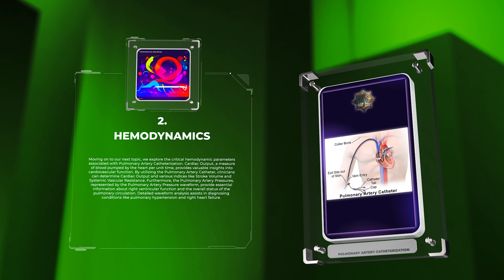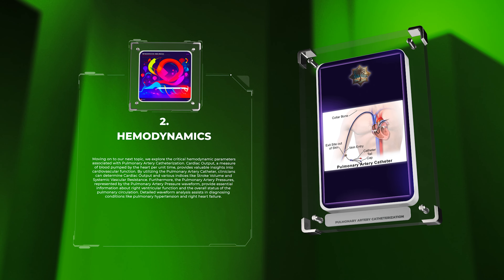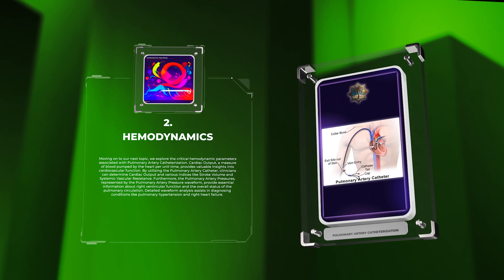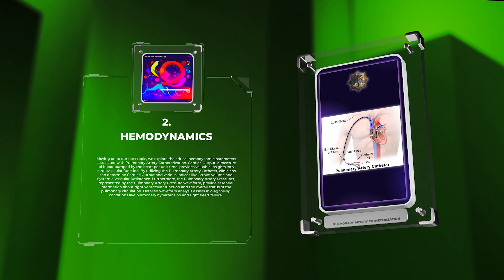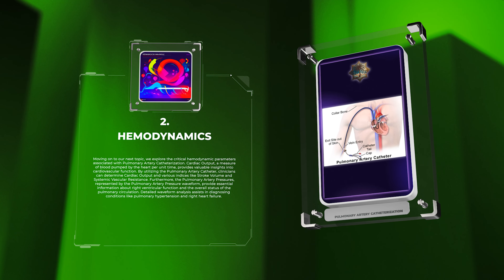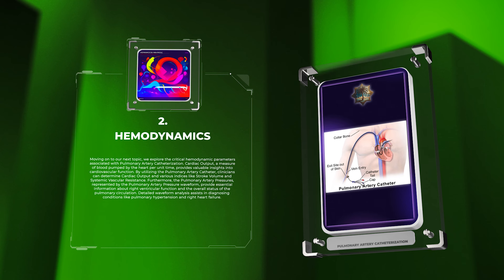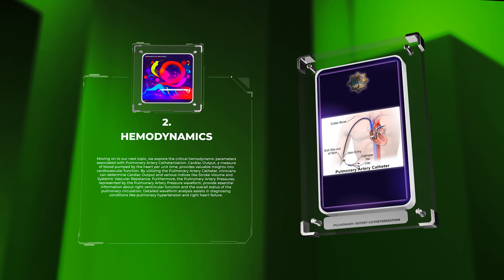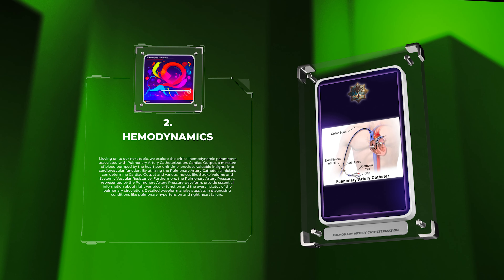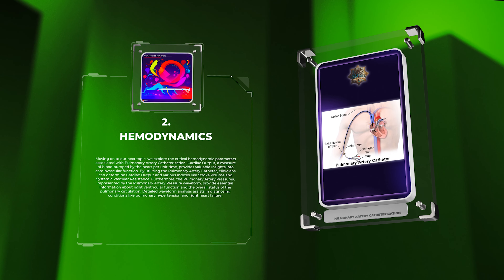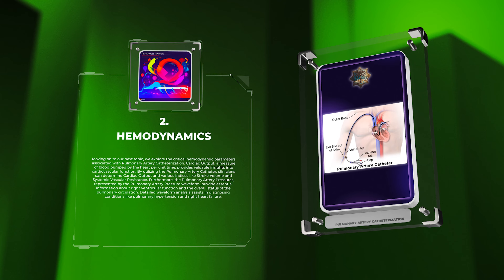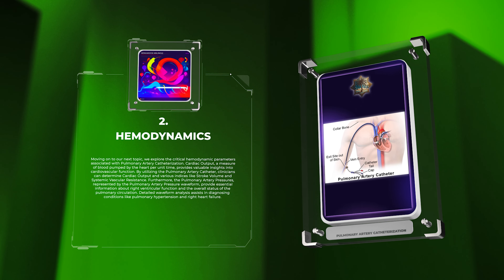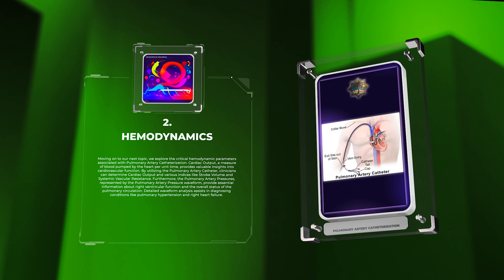Furthermore, the pulmonary artery pressures, represented by the pulmonary artery pressure waveform, provide essential information about right ventricular function and the overall status of the pulmonary circulation. Detailed waveform analysis assists in diagnosing conditions like pulmonary hypertension and right heart failure.